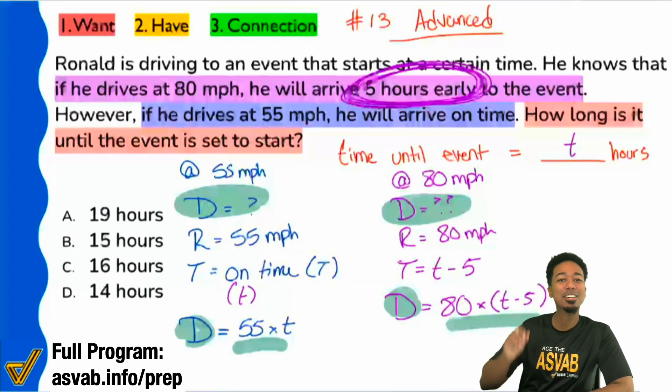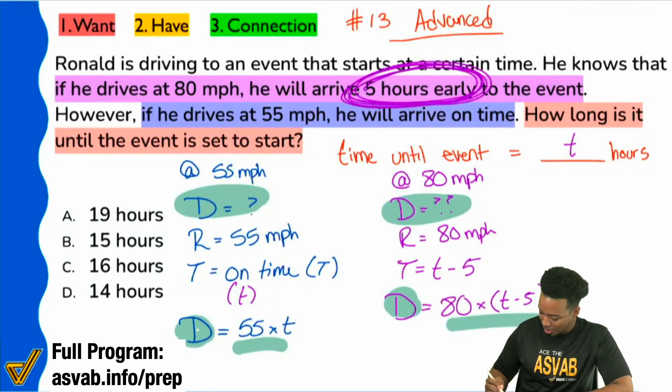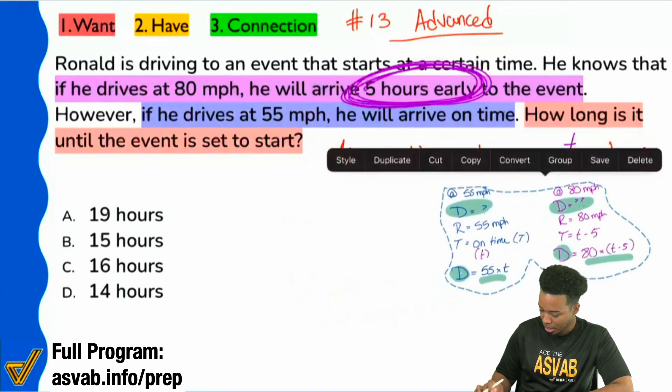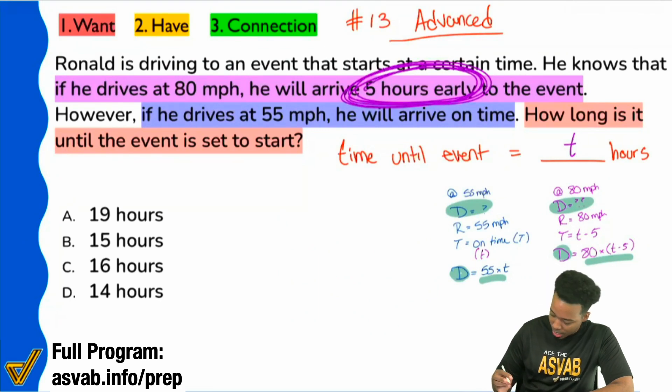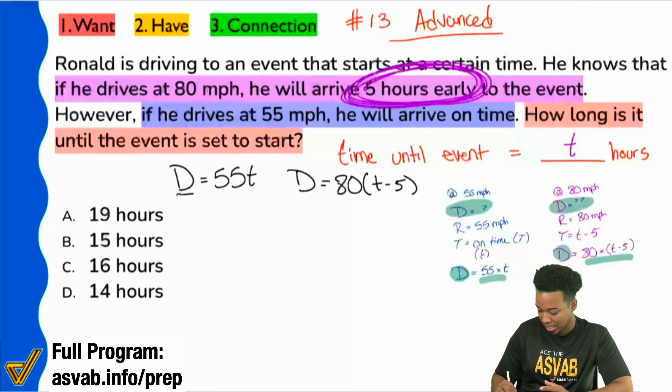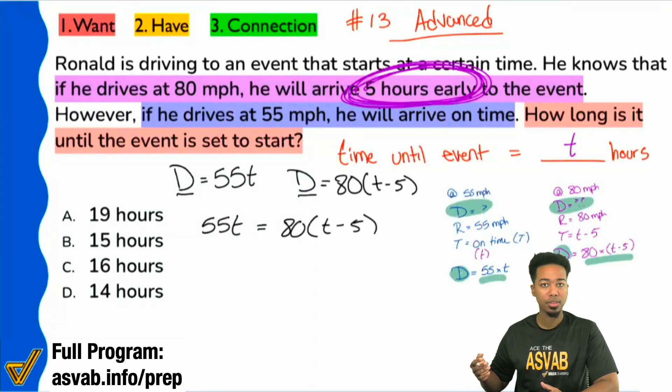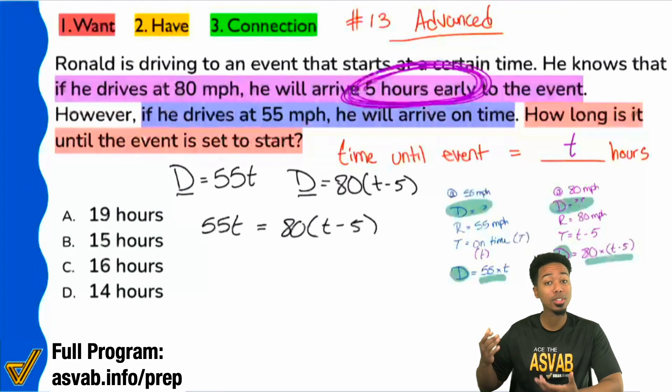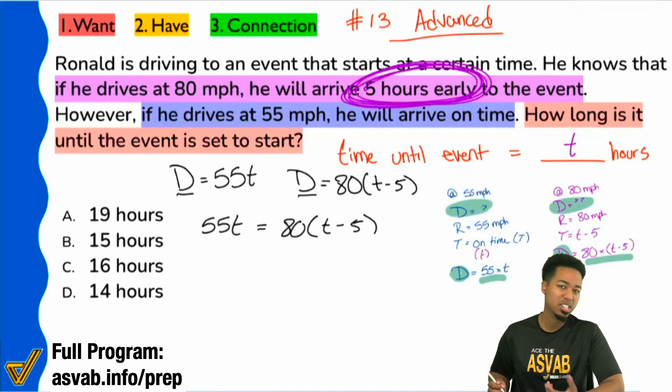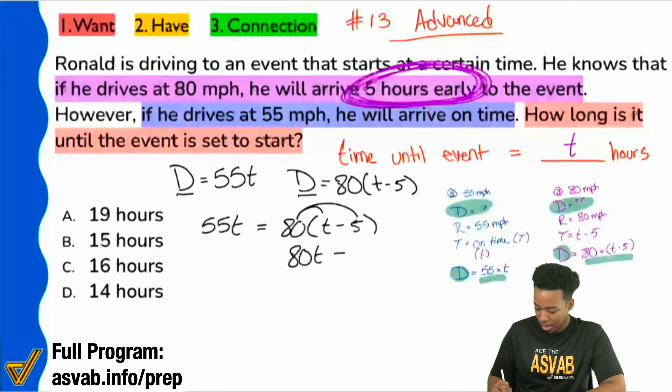That's what makes this complicated. Now that we have this setup, we can set them equal to each other and now we're good. So allow me to make this a little smaller, put that right over here. But we can go ahead and place these formulas together. So we have D equals 55T and we have D equals 80 times T minus five. We'll set these equal to each other because these distances are the same. So we'll have 55T equals 80 times T minus five. And that's it. Now we just solve this and we're done because we're looking for the time until the event starts, which is T, T hours. So here we go. Let's have some fun. We're going to distribute the 80. So that'll be 80T. 80 multiplied by negative five is minus 400. And now that we're here, we will continue on by subtracting 80T from both sides right there, allowing us to cancel that out.